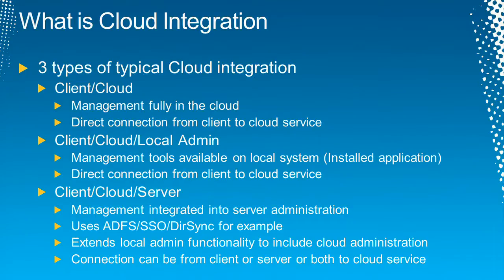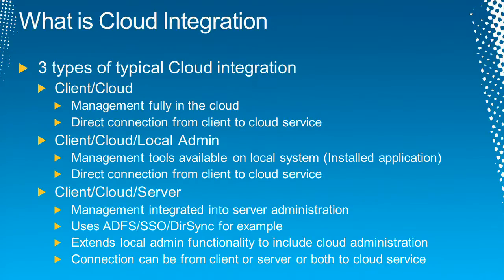Then we have the second type: client cloud with local administration. You still have a direct connection from the client to the cloud service with no integration in our server architecture, but the administration tools of that online service might be hosted locally. Office 365 is a really good example — I would call it a client cloud local admin model. You can configure your local Outlook client to point to it, or use Office web apps, and you can deploy those around on different clients.